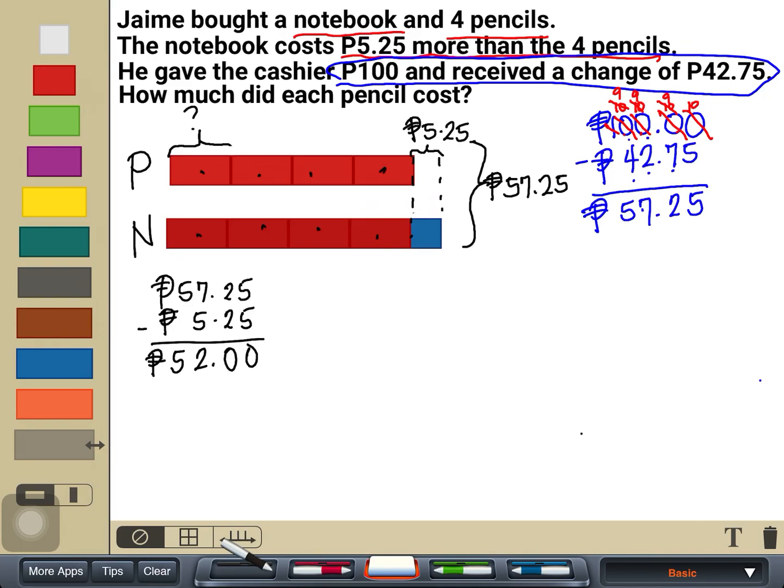So there are 8 units. Can you see those 8 units? That's 1, 2, 3, 4, 5, 6, 7, 8. And those 8 units is represented by 52 pesos. That would now be 8 units is 52 pesos. I want to know 1 unit only. If I find that 1 unit, then I will be able to answer the problem already. Because 1 unit is 1 pencil. And we're only looking for 1 pencil. How do I get 1 unit?